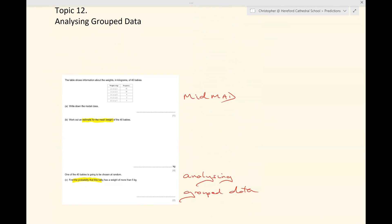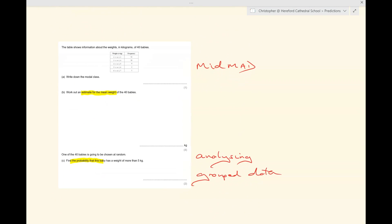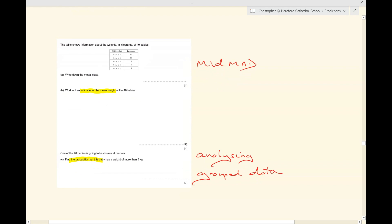Analysing grouped data. We haven't seen that yet. This is a very common sort of question where you're given some information. In this case, it's about the weights of 40 babies. You're asked to find the modal class and to work out an estimate for the mean weight of the 40 babies. I use MIDMAD to do that. And sometimes then you can be asked for some further analysis. In this case, you're asked to find the probability that a randomly chosen baby has a weight of more than 5 kilograms.